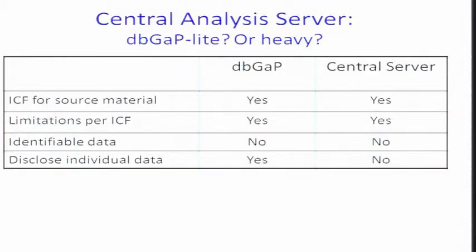The more I asked questions — I don't understand this, I don't understand that — this seemed very much like dbGaP to me. So I'm using that as an example. Comparing some things: the informed consent form for source material — yes for both. Limitations of use within the system or by recipient investigators will be limited by the informed consent form — yes for both.